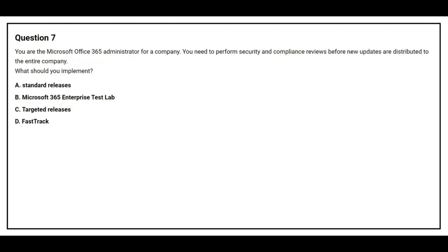Question number seven: you are the Microsoft Office 365 administrator for a company. You need to perform a security and compliance review before updates are distributed to the entire company. What should you implement? Option A: standard releases. Option B: Microsoft 365 enterprise test lab. Option C: targeted release. Option D: Fast Track. The correct answer is Option C — targeted release.